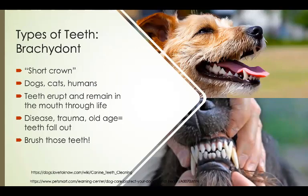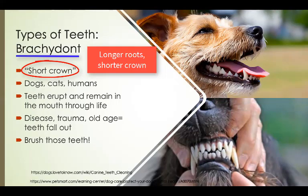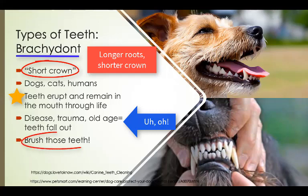Let's move on to types of teeth. Brachydont teeth are common in dogs, cats, and humans. The word literally means short crown because the crown is much shorter compared to the roots. This type of tooth erupts during the early stages of life and remains in the mouth as-is through life. Factors like disease, trauma, or old age might impair the health of these teeth and cause them to fall out. Dental care in the form of brushing the teeth is important in maintaining a healthy mouth.